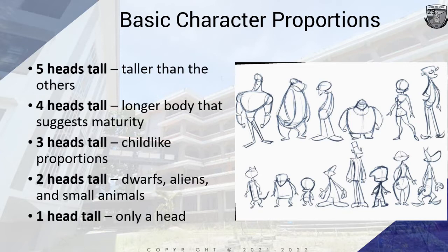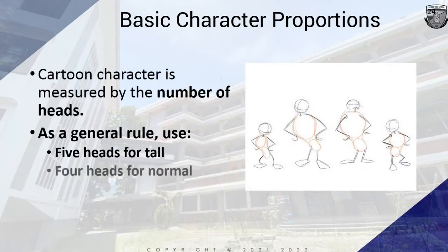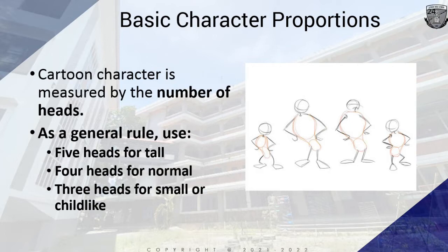Here are guidelines for character proportions: five heads tall for taller characters, four heads tall for a longer body suggesting maturity, three heads tall for child-like proportions, two heads tall for dwarfs, aliens, or small animals, and one head tall — only a head — as seen on different Digimon characters. As a general rule: use five heads for tall characters, four heads for normal characters, and three heads for small or child-like characters.